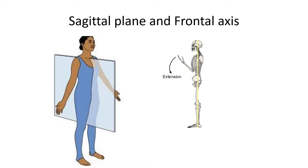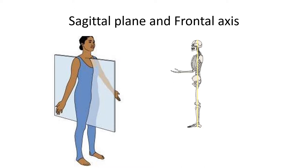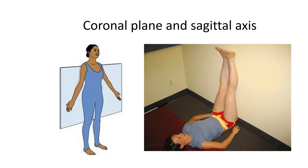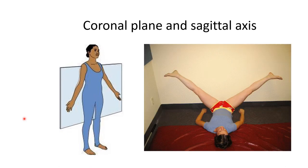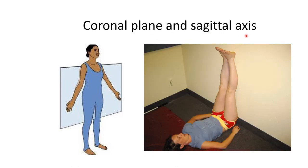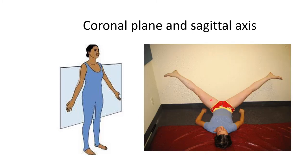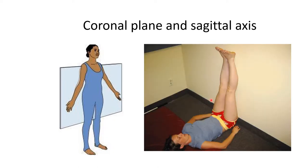Observe the movement that takes place in the sagittal plane and frontal axis — the movements are flexion and extension. This direction is flexion and back is extension. Now look at the movement for the coronal plane and sagittal axis. The movements are abduction and adduction — bringing together is adduction and moving away is abduction.